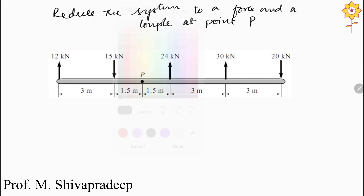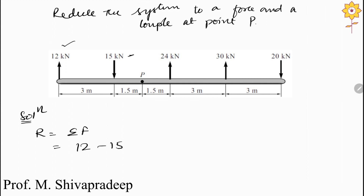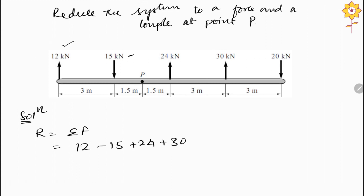To start with the solution, to find out the resultant of this entire force system, R equals the summation of all forces. 12 kilo Newton acting upwards is positive; 15 kilo Newton acting downwards is negative; 24 kilo Newton acting upwards is positive; 30 kilo Newton acting upward is positive; 20 kilo Newton acting downwards is negative. Putting these into the calculator we get R equal to 31 kilo Newton.